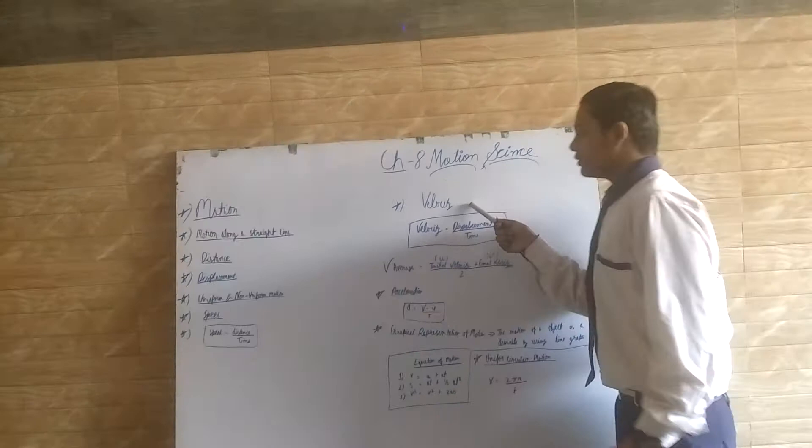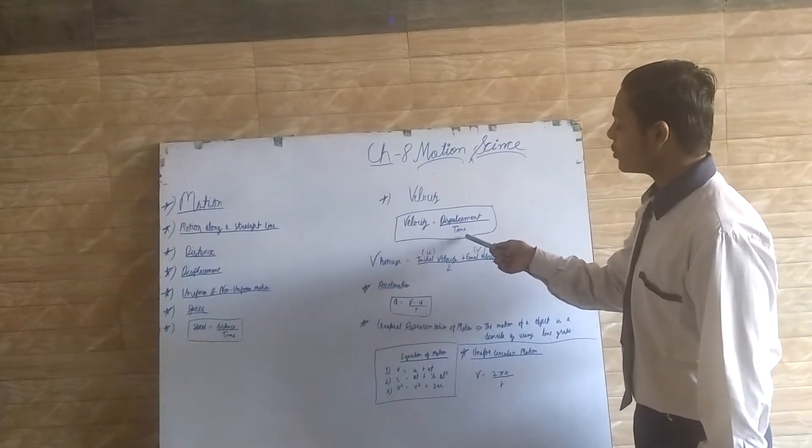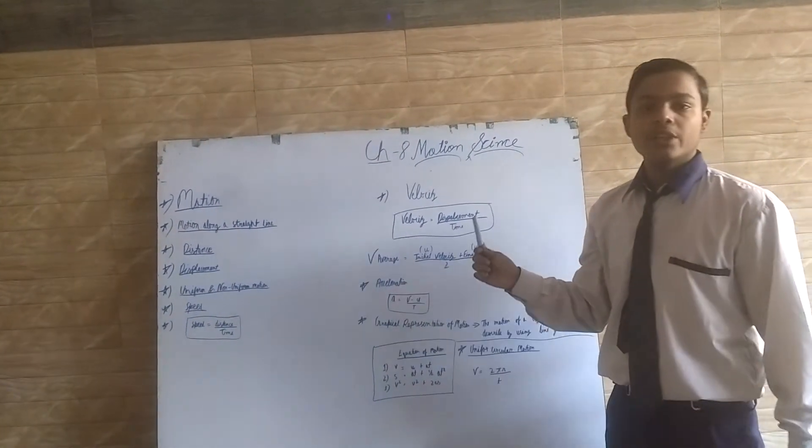Velocity is defined as the displacement per unit time. Its SI unit is meter per second.